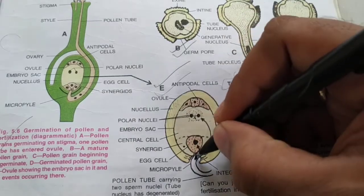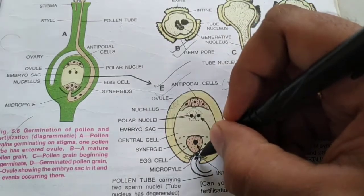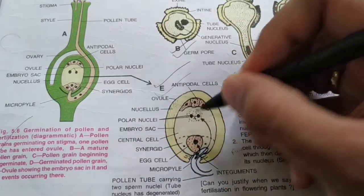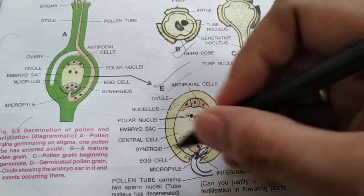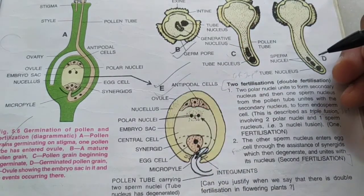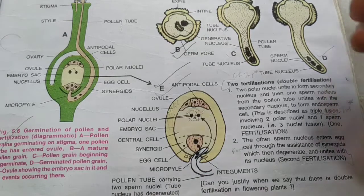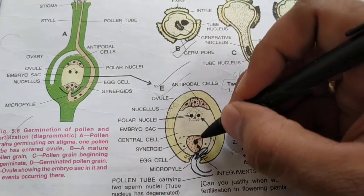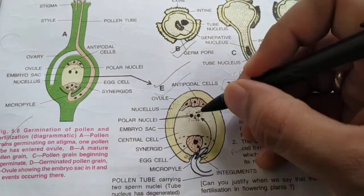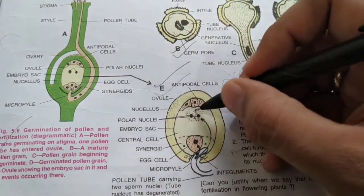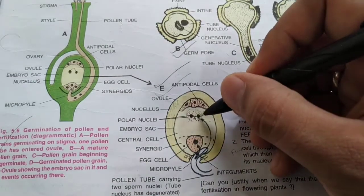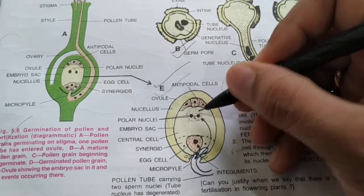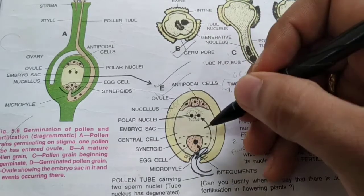One male gamete fuses with the female gamete, and the other male gamete fuses with the polar nuclei. Since two fertilizations are taking place simultaneously, the entire process is called double fertilization. The first fusion forms the zygote, and the triple fusion forms the endosperm, which will provide food for the future embryo.